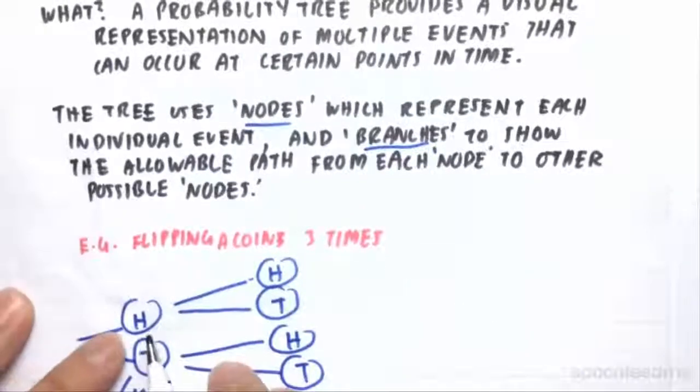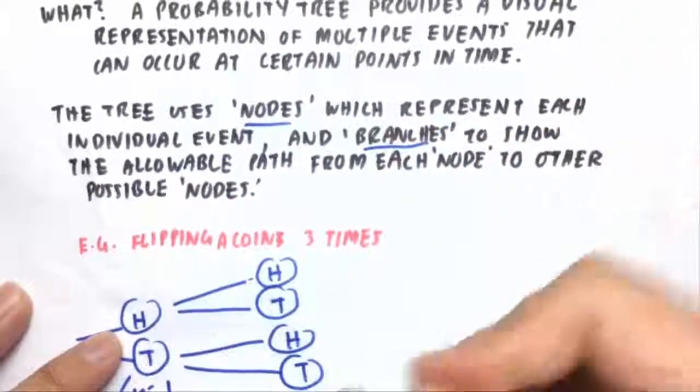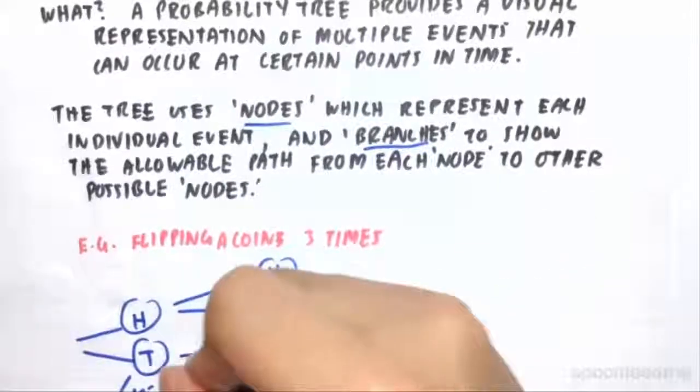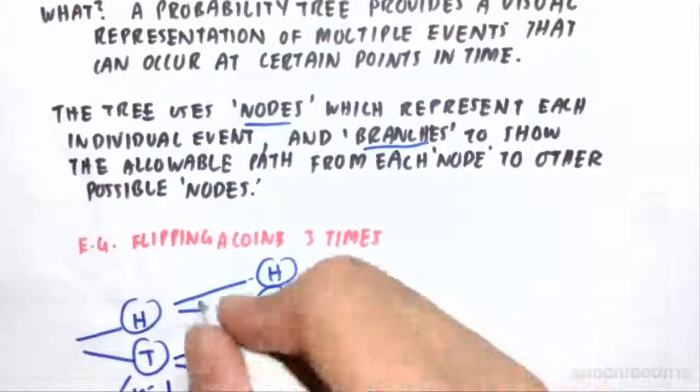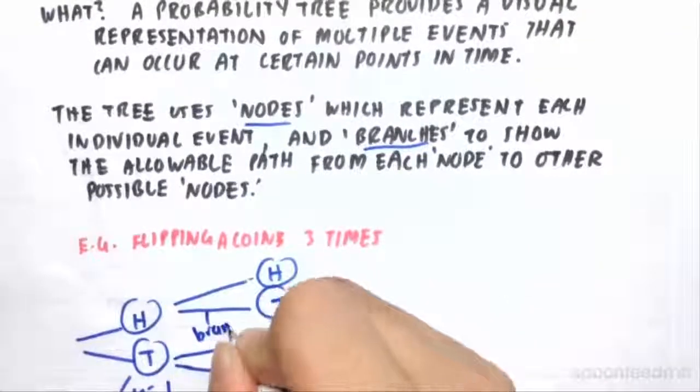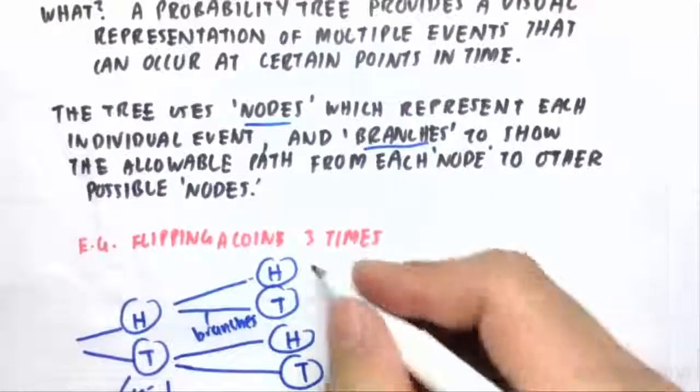So for example, if we flip one head, our next sequence flip, we can get another head or another tail. And then similarly, if we flip a tail, we can either get in our next flip a head or a tail. And these are our branches that show the paths to these other nodes.